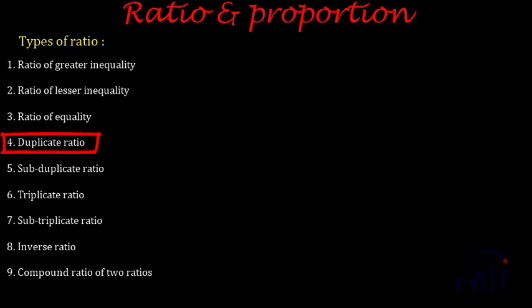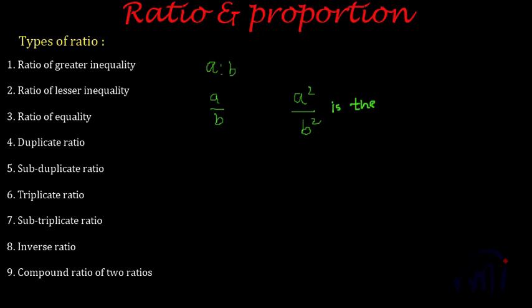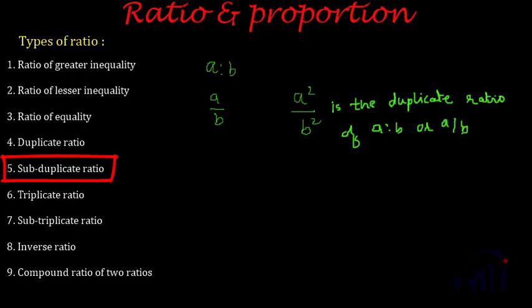After that we have the duplicate ratio. Suppose you have a ratio A is to B, which can also be written as A by B. Then the duplicate ratio of A is to B will be written as A squared by B squared. So A² : B² is the duplicate ratio of A : B.